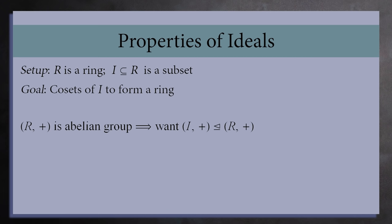And because R is abelian, every subgroup is normal. So this gives us our first requirement.